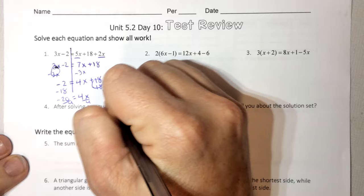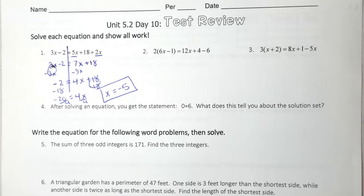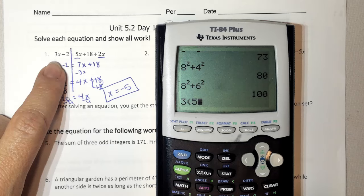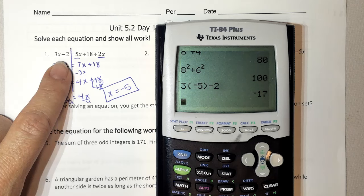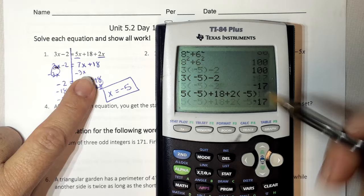We can plug it in and check our work on the test. So on the left side, we're going to plug in negative 5. So 3 times negative 5 minus 2 is what the left side equals. So when I plug it on this side, I should get the same thing. 5 parenthesis negative 5 plus 18 plus 2 times negative 5. And I do. So I did it correctly.